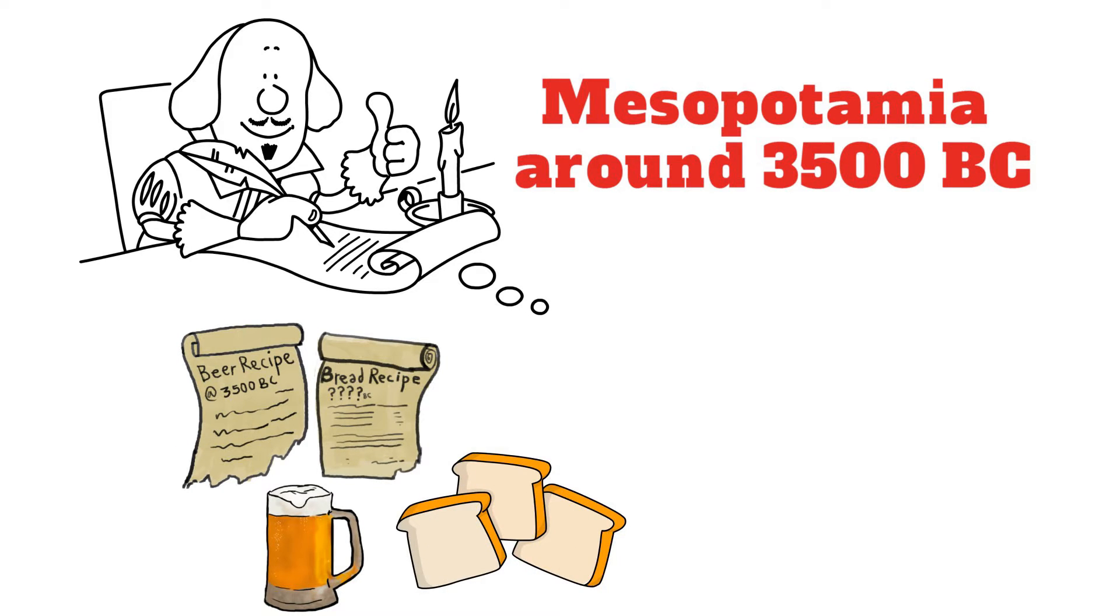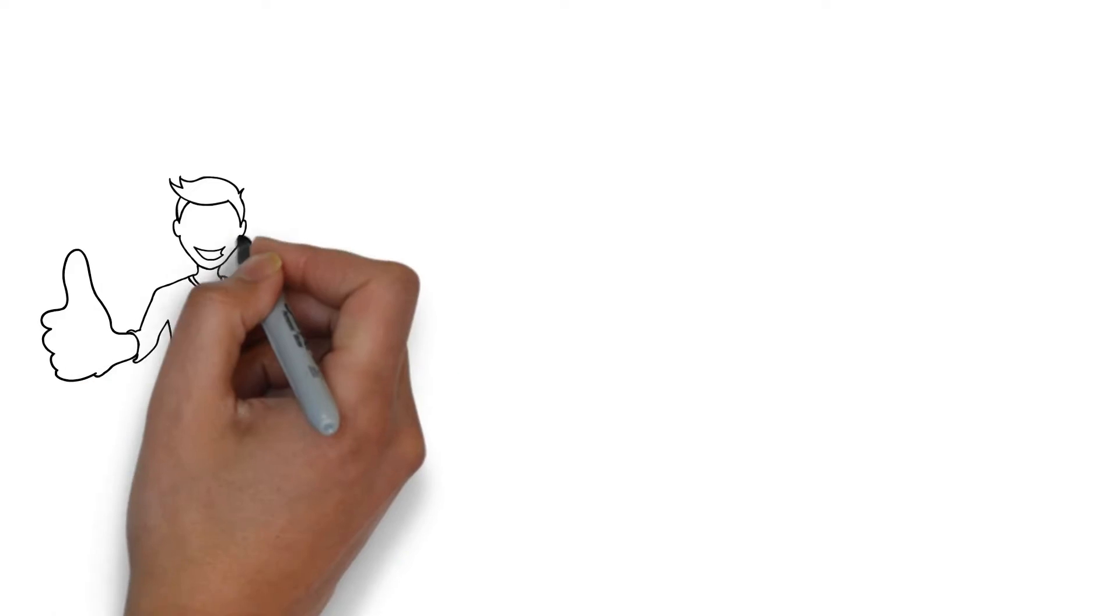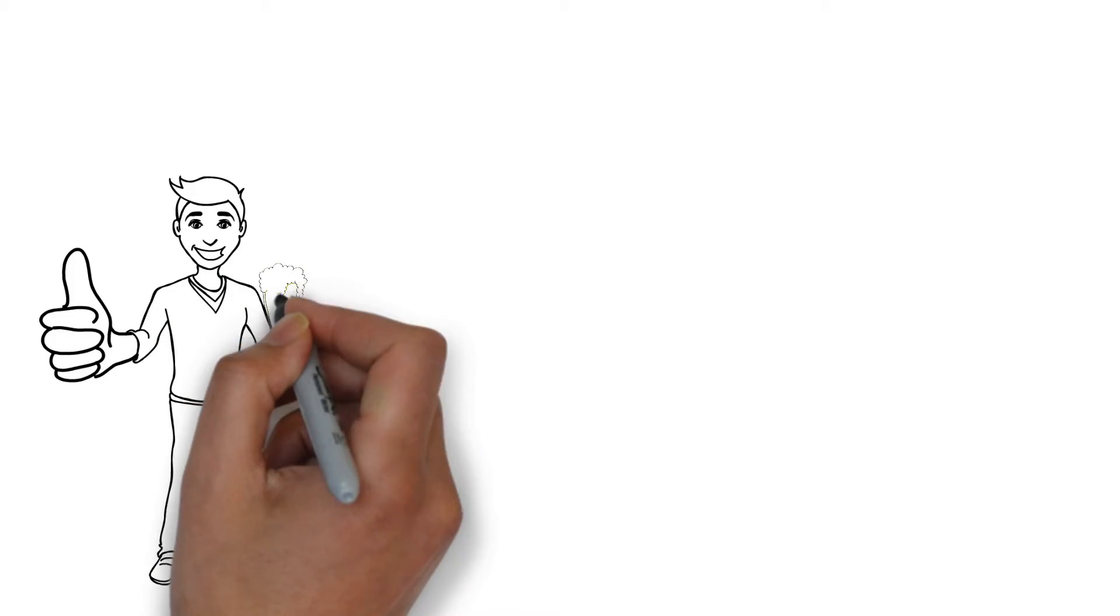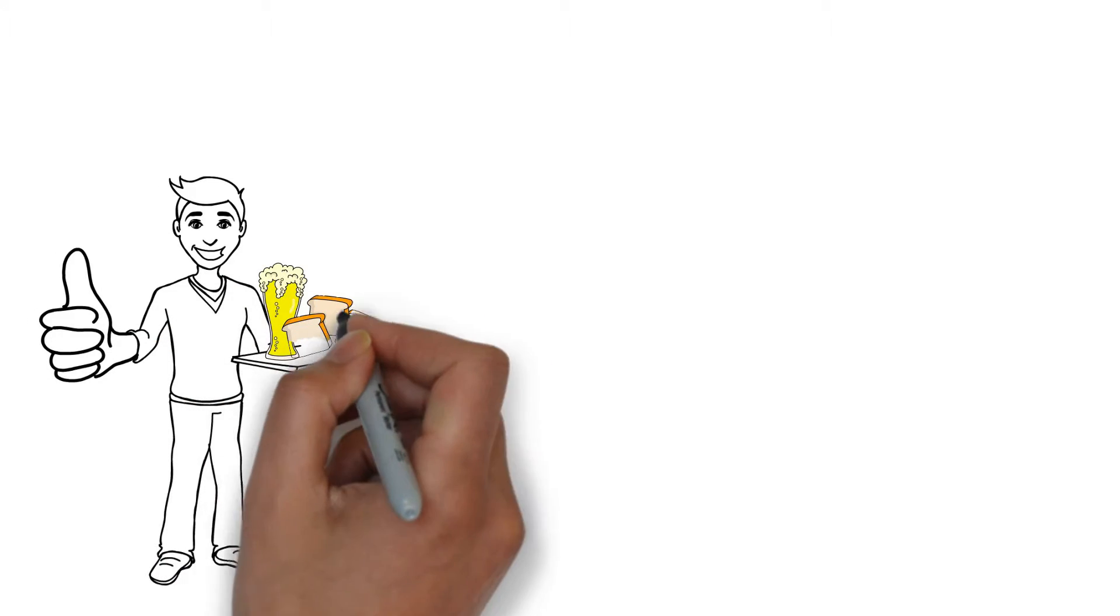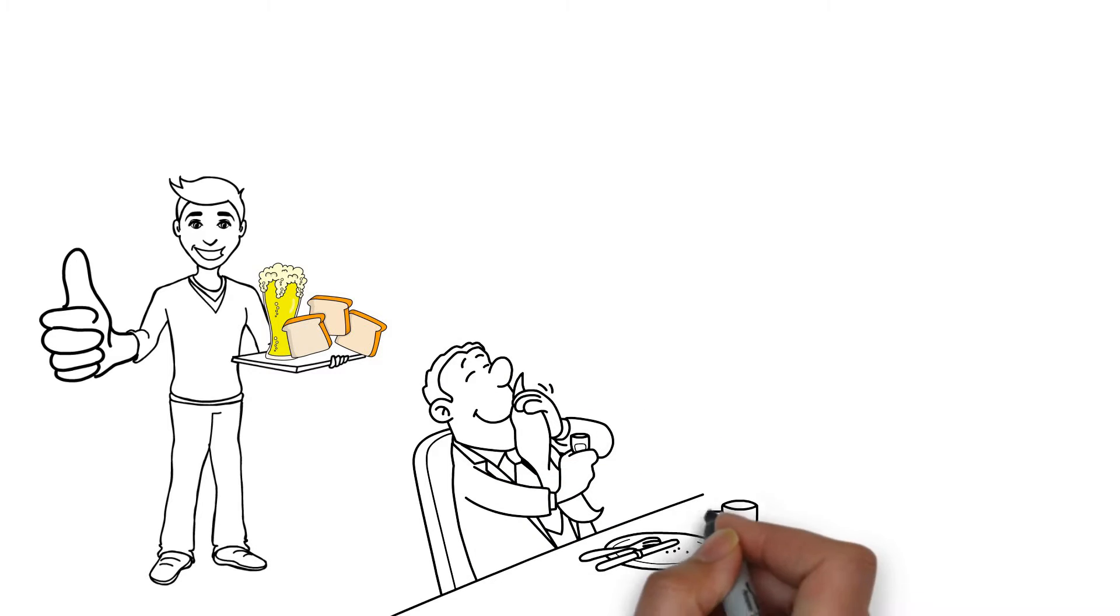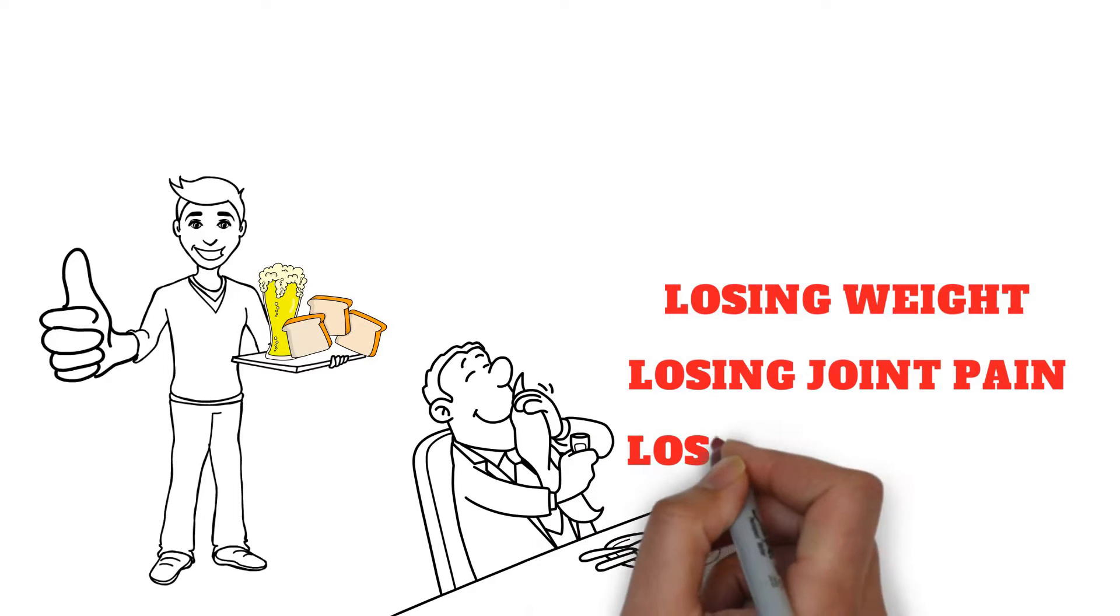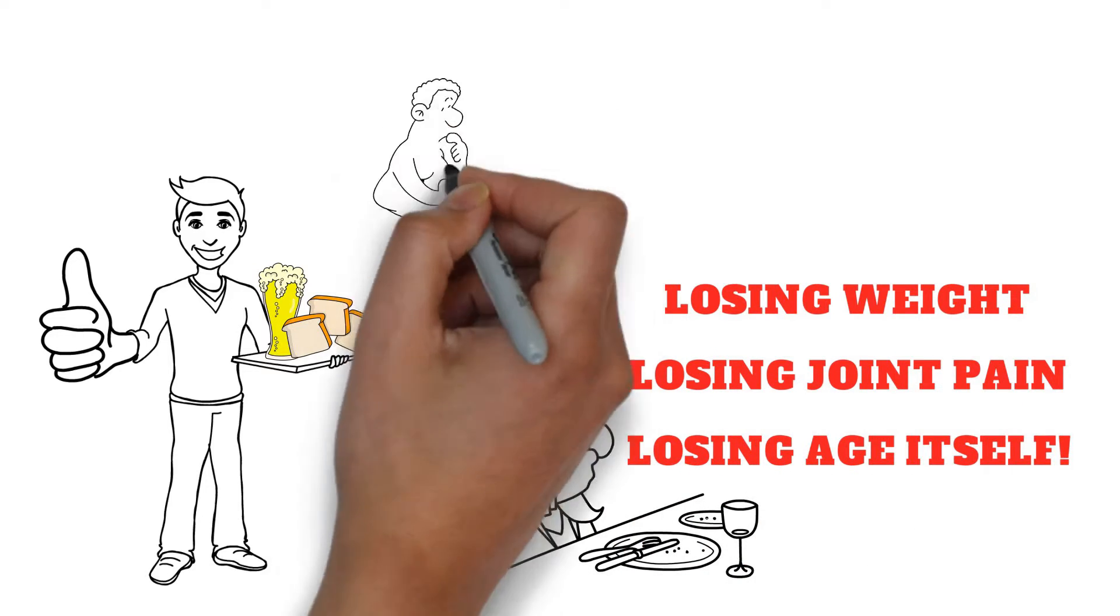Beer is the first place winner and bread is a close second. So there you have it, one reason why Triple B is featured on the cover of this book. Another more important reason is to dramatize that these forever historically popular foods can be liberally consumed while still achieving the three major goals of this book: losing weight, losing joint pain, and losing age itself.